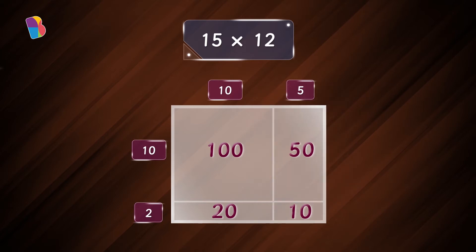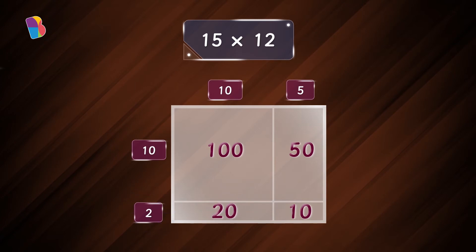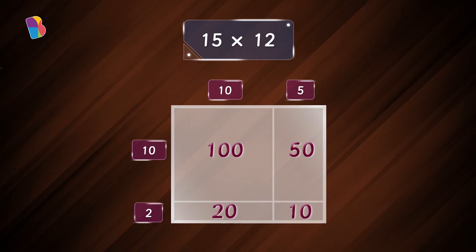The area of the second rectangle is five times ten, which is fifty. The area of the third rectangle is ten times two, which is twenty. And finally, the area of the last rectangle is five times two, which is ten.